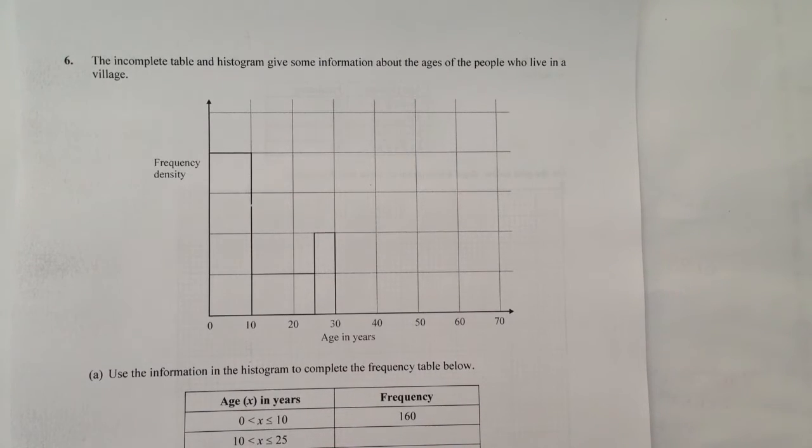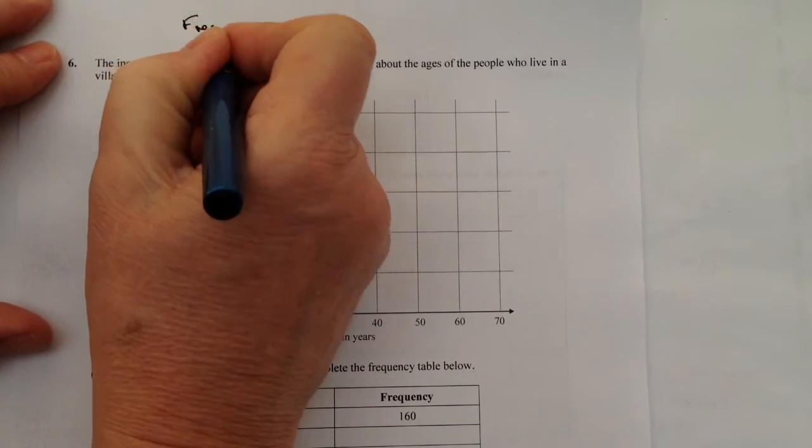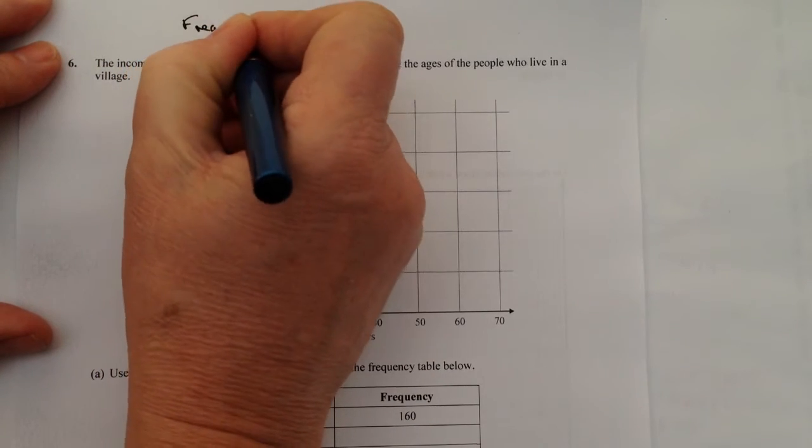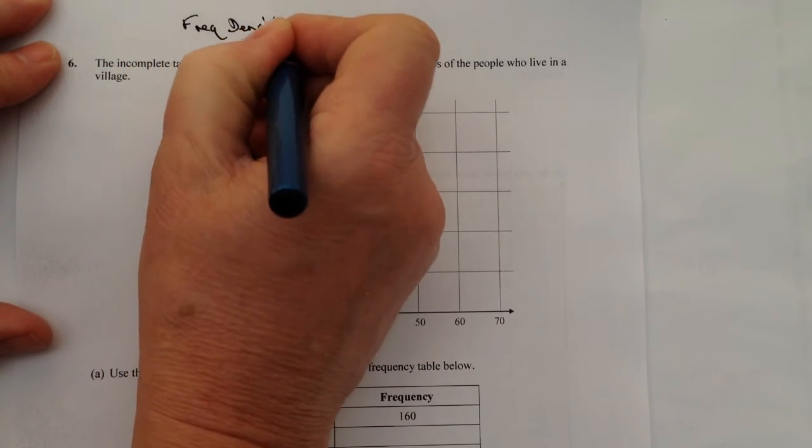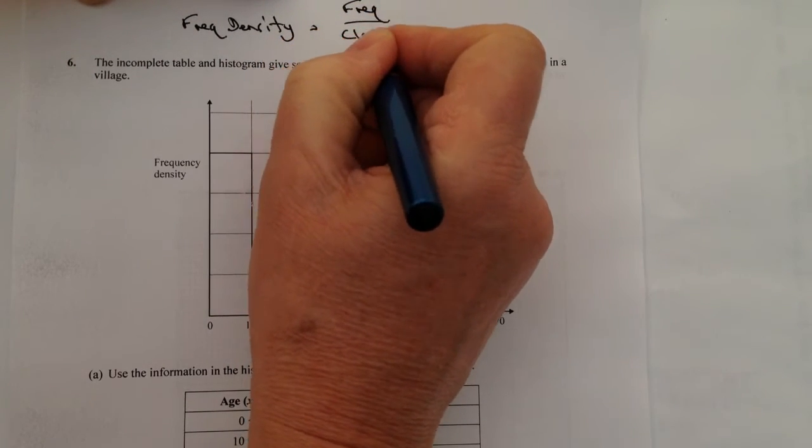Now, like before, with all of the histogram questions, it's always a good idea the very first thing you do is to write out the formula that you're going to need to use. So frequency density equals frequency divided by class width.